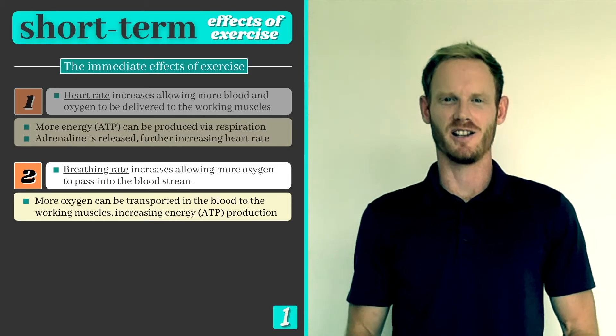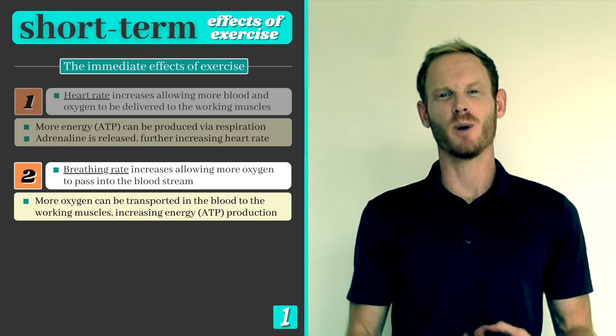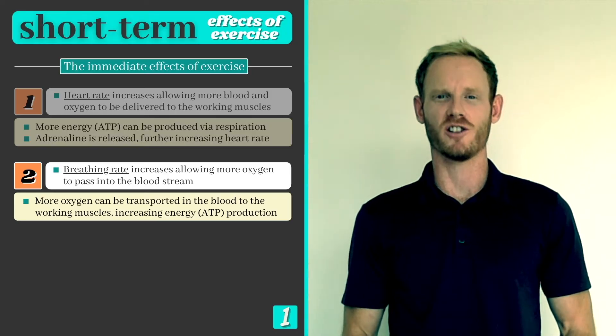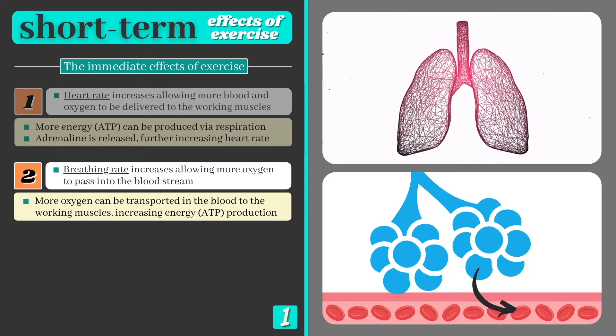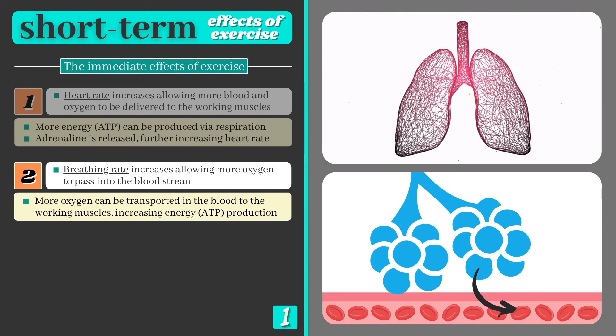Breathing rate also increases as we start to exercise in response to the increased demand for oxygen in our muscle cells. The faster we breathe and the deeper our breaths, the more oxygen can pass from the lungs into the bloodstream via the alveoli where it can be transported by the action of the heart.